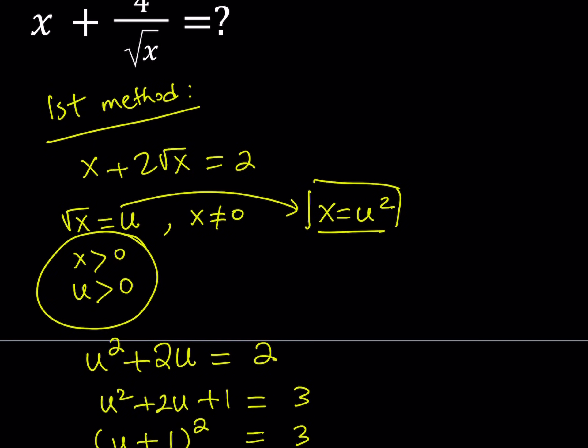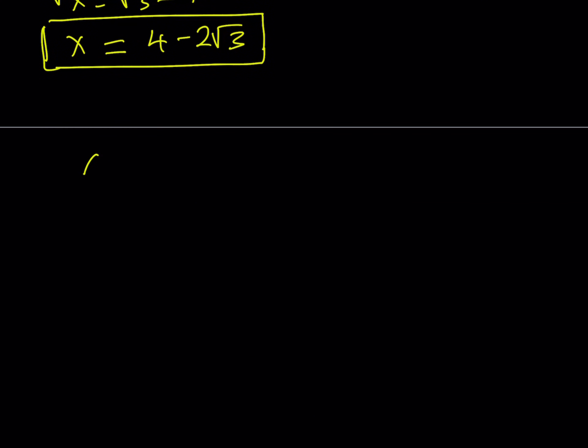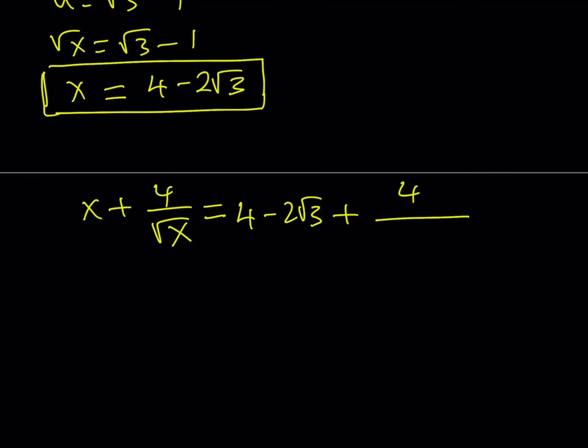So, let's go ahead and plug that in. Since we're trying to evaluate another expression, which is x plus 4 over square root of x. Now, we got the x value, so we can easily substitute that into our equation. And that gives us 4 minus 2 root 3 for x plus 4 divided by square root of x.